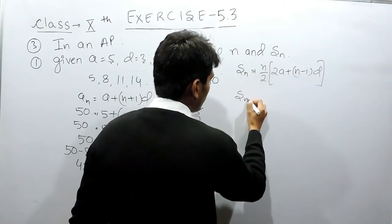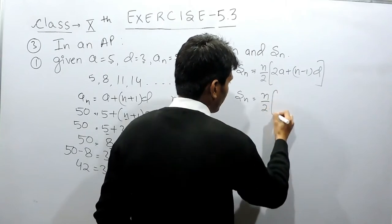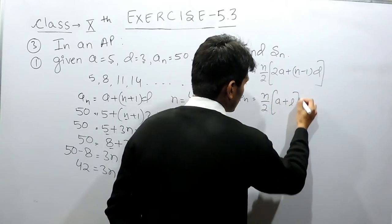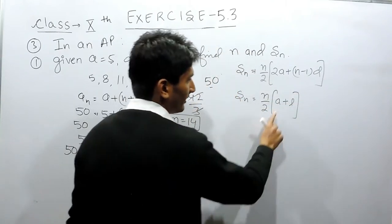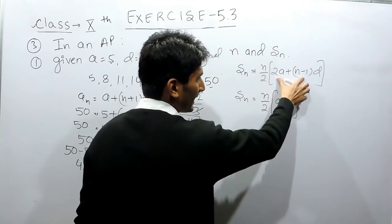And there is another formula. If we know the last term, so we can also find the sum using this formula where A is the first term and L is the last term. This is same as this.